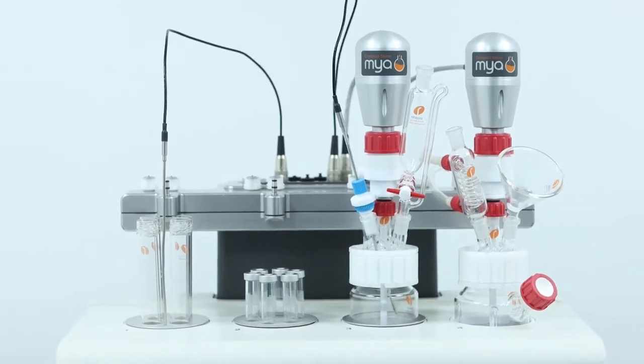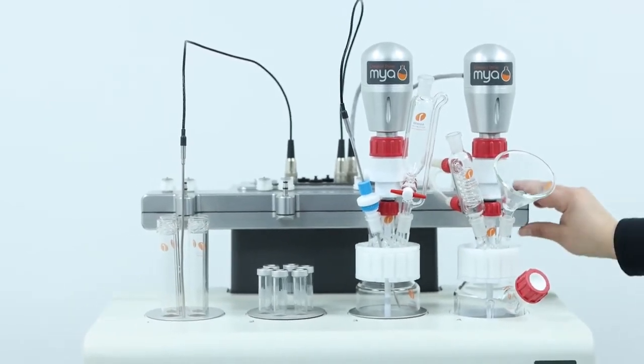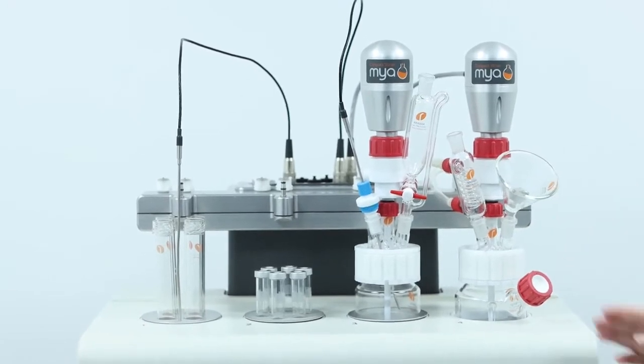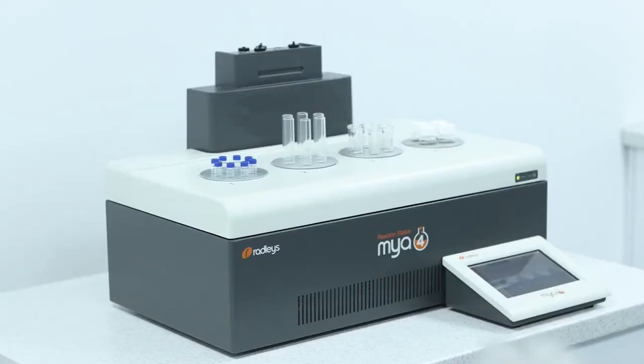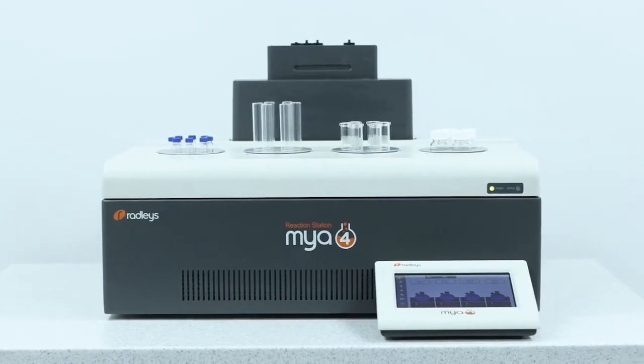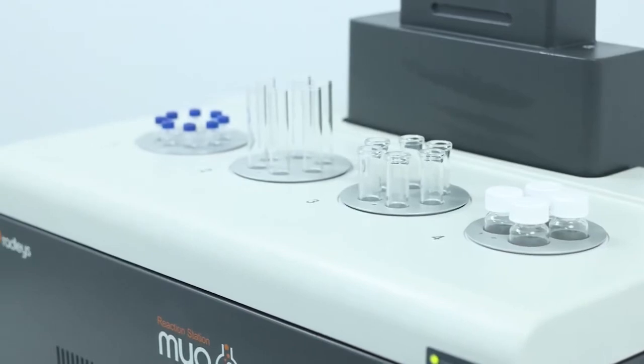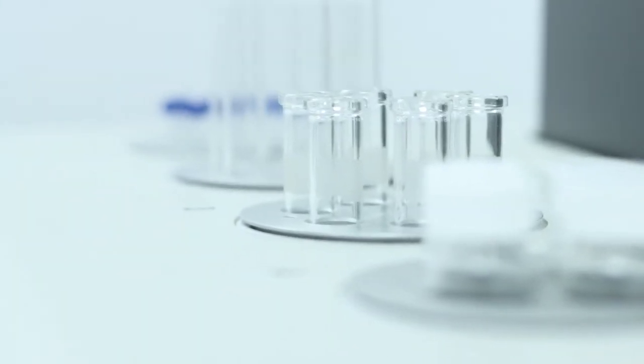As you can see here, the vial inserts are used in the presence of a manifold head. The head is used to provide refluxing and inerting when using vessels and flasks. The refluxing and inerting capabilities don't apply to the multi-position tube inserts, so you could use tubes and vials with no head at all.